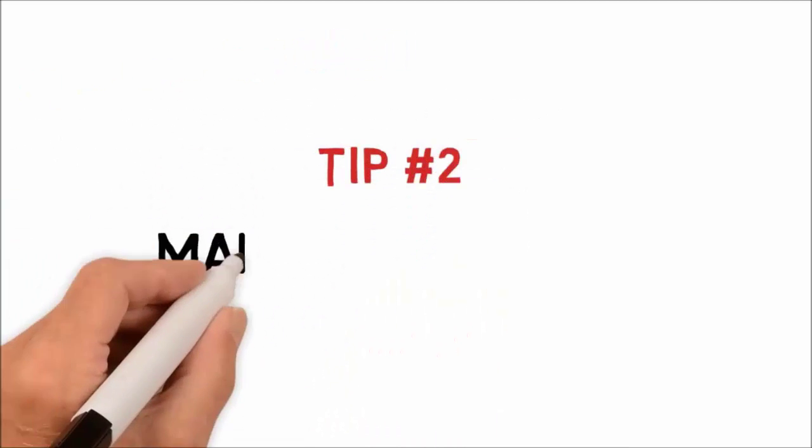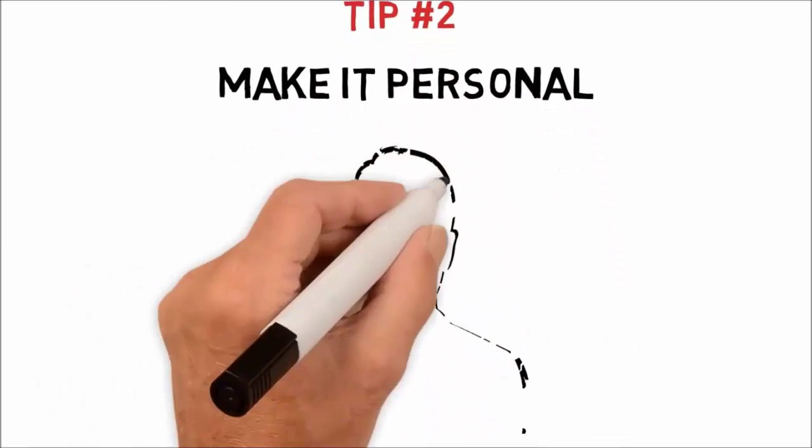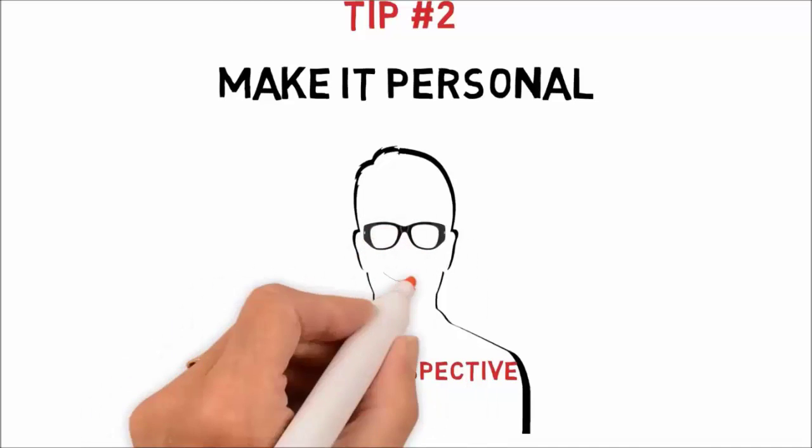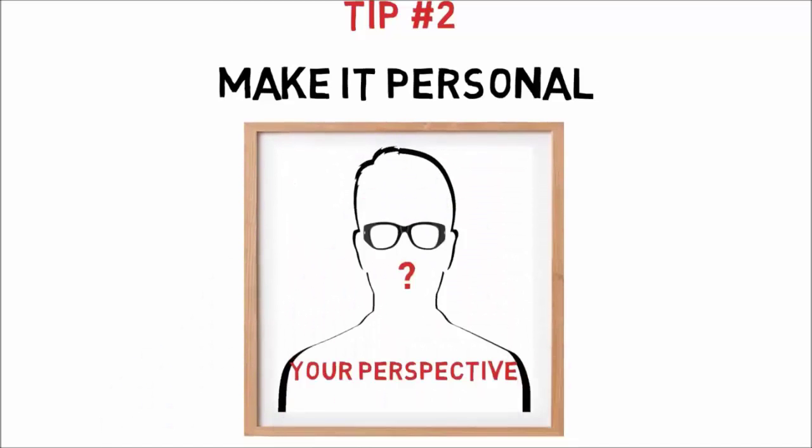Tip 2: Make it personal. Your digital story is unique. It is your story, and your audience wants to hear it from your perspective. You may choose to include personal details in your story in order to add emotional depth, although it is completely up to you to decide which details you wish to share with your viewers.